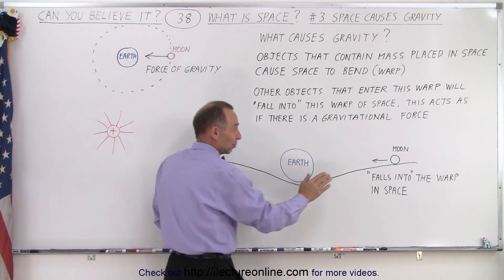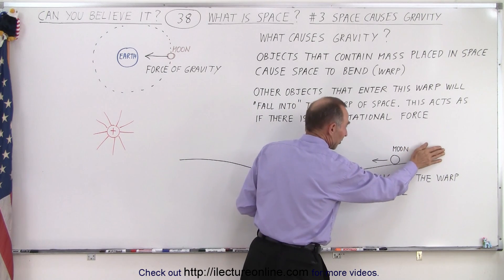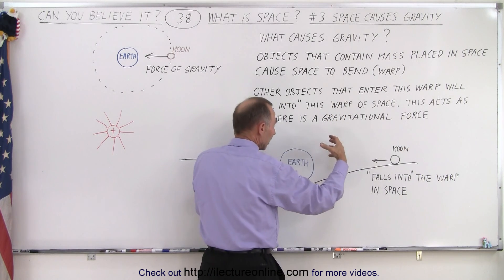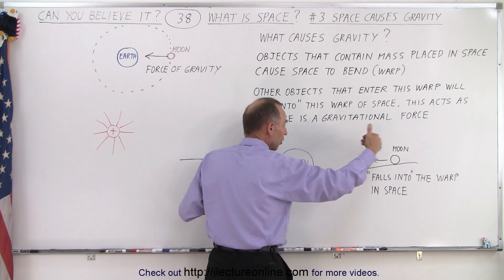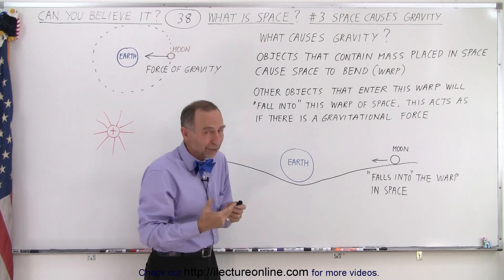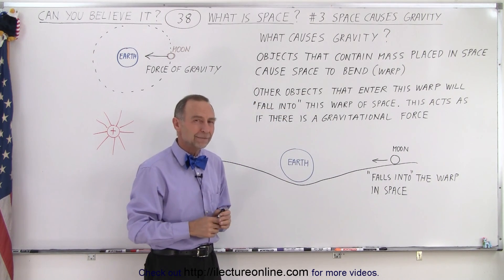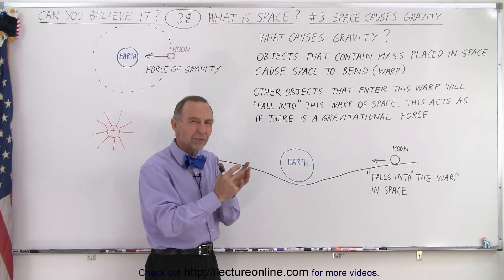It's almost like there's less pressure on this side and more pressure on this side. The closer you are to a planet, the less pressure there is, so all objects fall into the region of less pressure. But again, we don't think it's pressure.